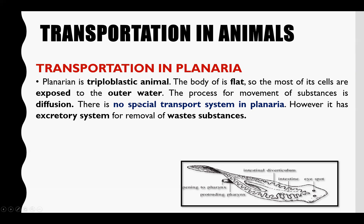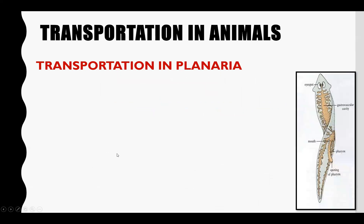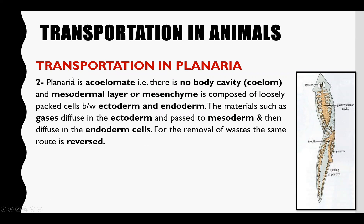There is no special transport system in planaria. First of all, the body is flat and the surface area is large, so exchange is easily possible between the body and environment by simple diffusion. The body cavity does not exist — there is no coelom. The middle mesodermal layer is made of loosely packed cells called mesenchyme, which is not a properly developed mesoderm.